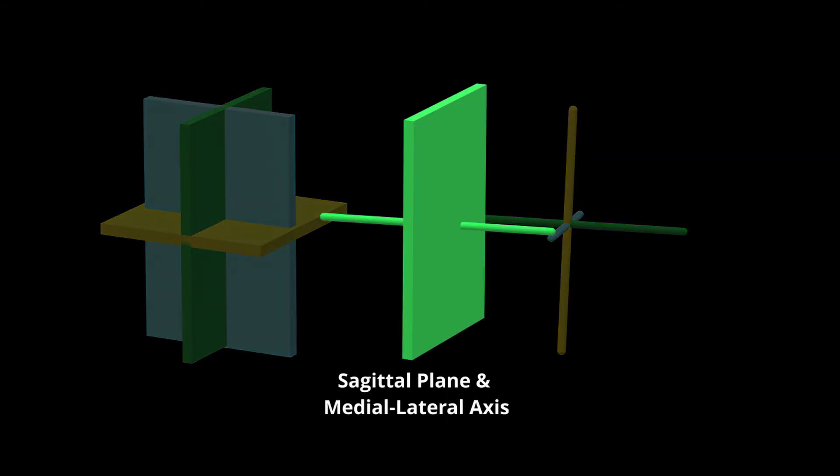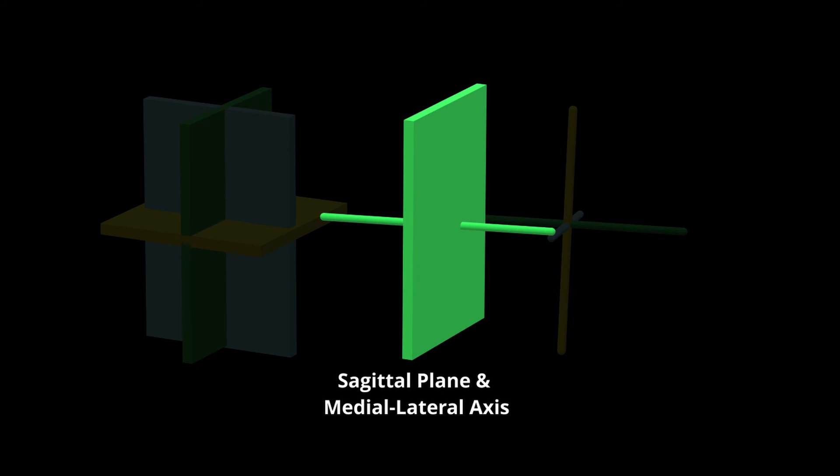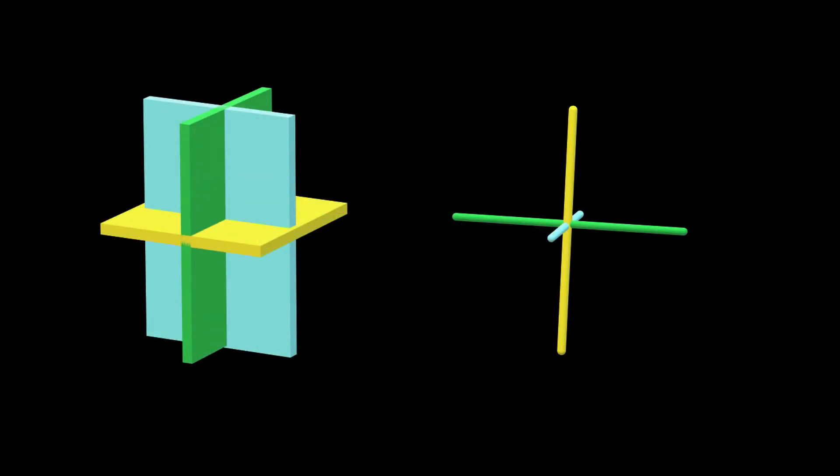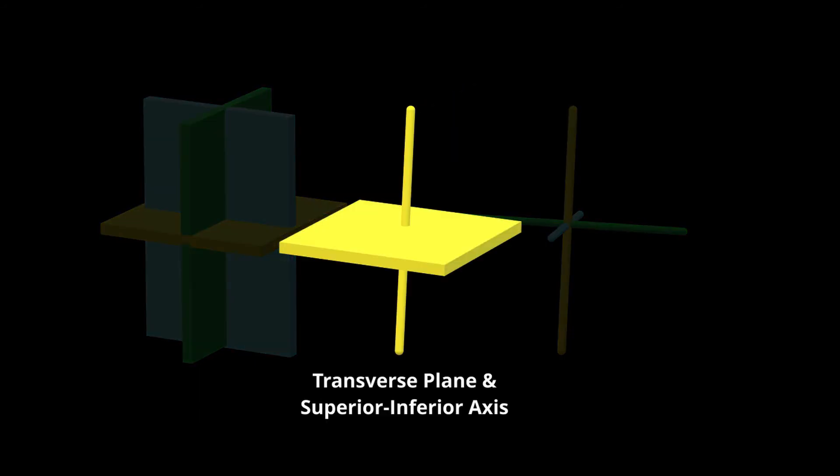Here we have our sagittal plane with the medial lateral axis, again aligned at 90 degrees to each other. Finally, we have our transverse plane and our superior-inferior axis, which make a pair and are aligned at 90 degrees to each other.